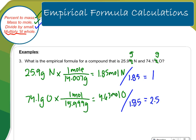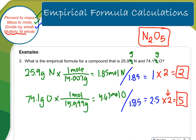To get 2.5 to be a whole number, I need to multiply by 2 and it gives me 5. If I've done this to one step, I've got to do it to the other. So my ratios are 2 to 5. So I've got N2O5 as my empirical formula. Alright, let's move on.